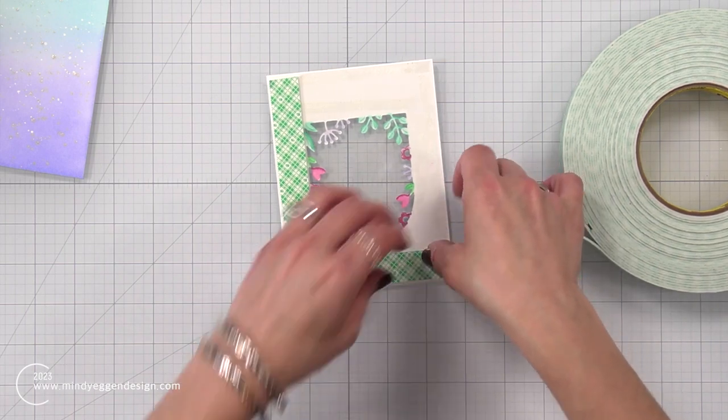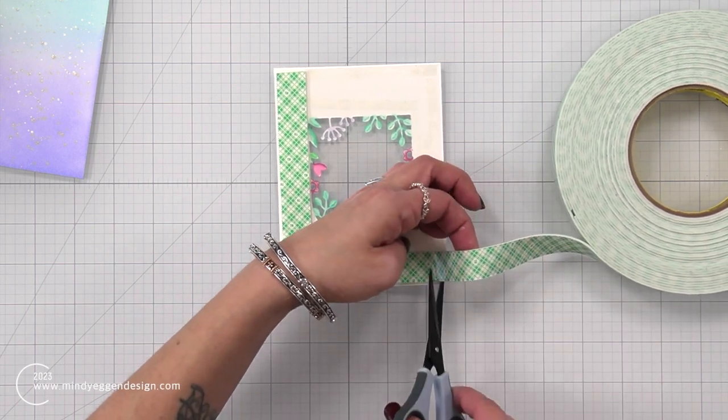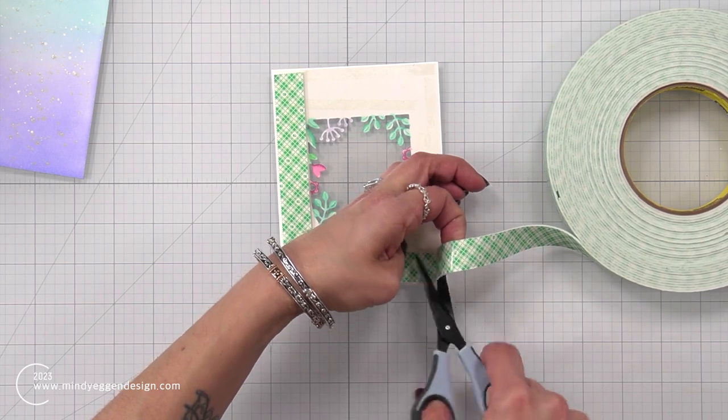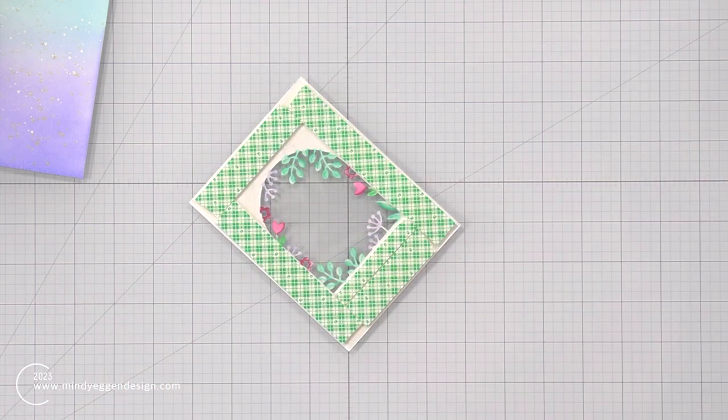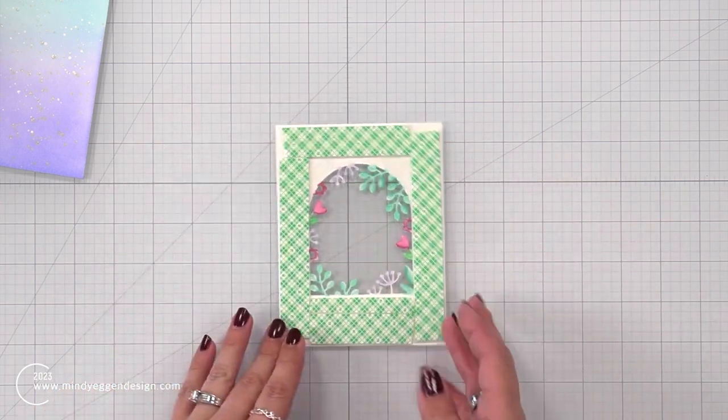So to do the shaker, I'm taking foam tape and lining it on the back of this. You just want to make sure all of your foam tape is connected so you don't have any shaker bits fall out. So here I have that completely lined with my foam tape.